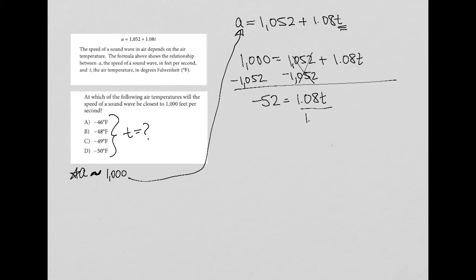Then we can divide both sides by 1.08. And then you can take your calculator because this is the calculator section of the SAT. So you take your negative 52 divided by 1.08.